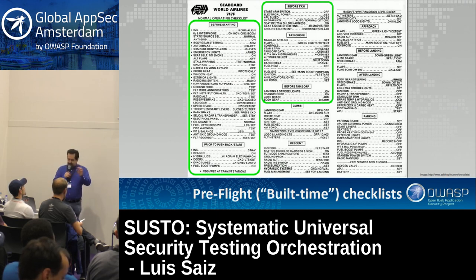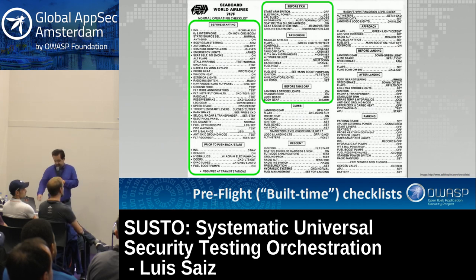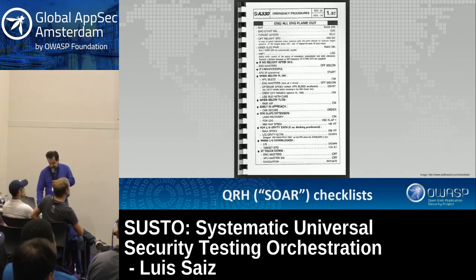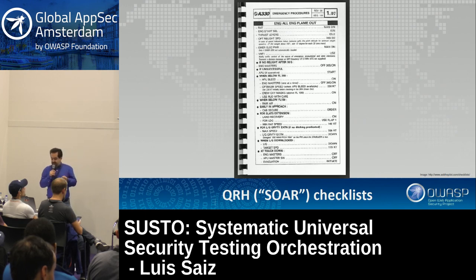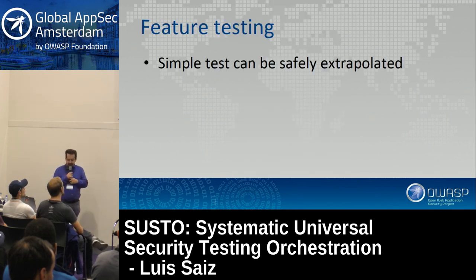Let's see what these checklists look like. We have a pre-flight checklist that is like our build time — before launch to production, before fly, you need to pass some checks. And during the flight you also have checks, which would be our runtime checks. Pilots also have a quick reference handbook in case of an incident — this is something like our playbooks in SOAR tools, the automation of our response on security incidents.